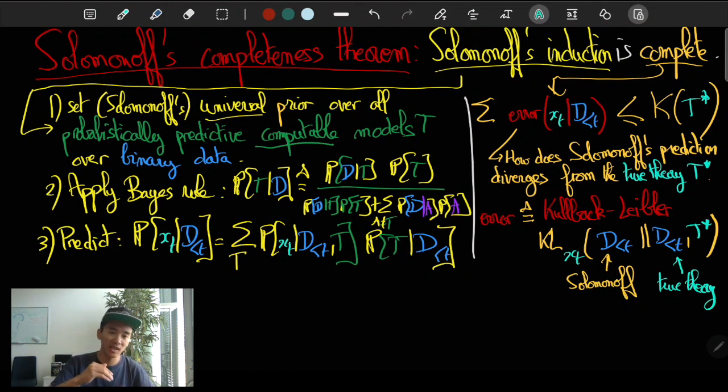It's going to be equal to zero if and only if we make the exact right prediction, and it's going to take larger and larger values if we make poorer and poorer predictions, namely if the prediction of the Solomonoff demon is very far remote from the predictions of the true theory t-star. And what we would want is an argument to say that this difference here, the KL divergence between these two predictions, is going to go to zero.